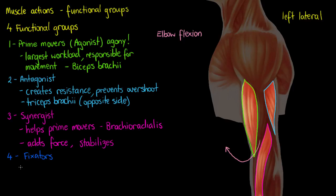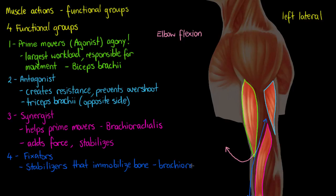The fourth and last functional group is the fixators. Fixators are a more specific type of stabilizer muscle that gives the prime mover an immobilized bone to act upon. Without the brachioradialis, elbow flexion would cause the bicep to rotate the radius as it lifted upward, resulting in a mobile bone. Because of the brachioradialis, we can prevent this rotation and immobilize the radius for the bicep to pull against — making it both a fixator and a synergist in this case.